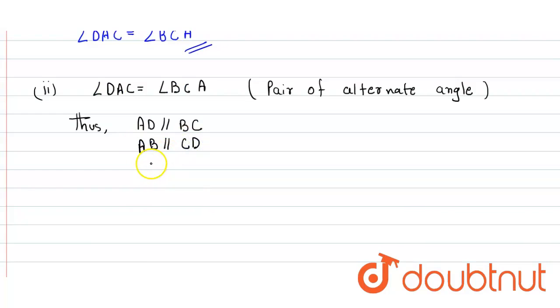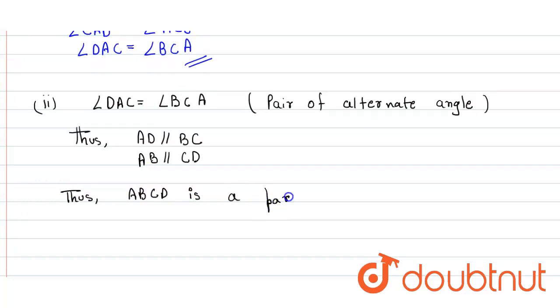So the opposite sides are parallel. It means ABCD is a parallelogram. Thus ABCD is a parallelogram. Hence proved.